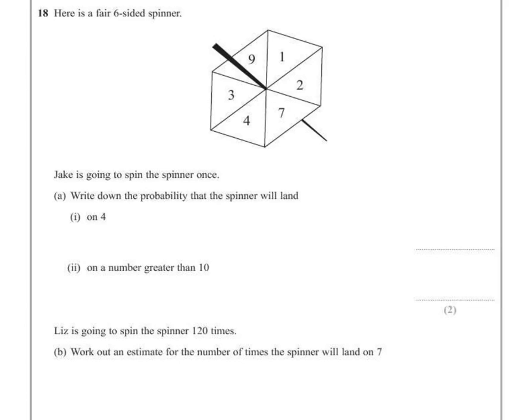Jake is going to spin the spinner once. Part A. Write down the probability that the spinner will land on a 4.